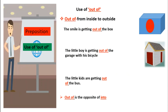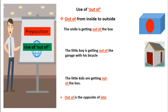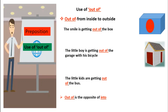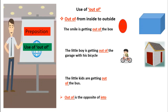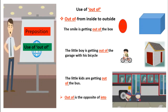Then we are going to focus on the use of 'out of'. 'Out of' is the opposite of 'into'. 'Out of' is used to mean from inside to outside — if something goes outside from inside, we use 'out of'. Like, the smiley is getting out of the box. The little boy is getting out of the garage with his bicycle. The little kids are getting out of the bus.